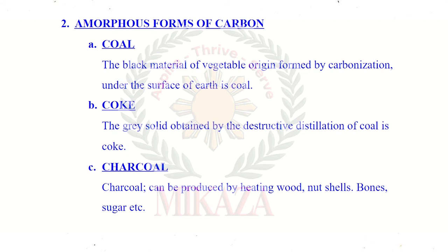Amorphous forms of carbon include coal. The black material of vegetable origin formed by carbonization under the surface of the earth is coal. Carbonization is the removal of hydrogen and oxygen from wood by bacterial action — i.e., bacteria remove hydrogen and oxygen from vegetables or plants so that they can be converted into coal.